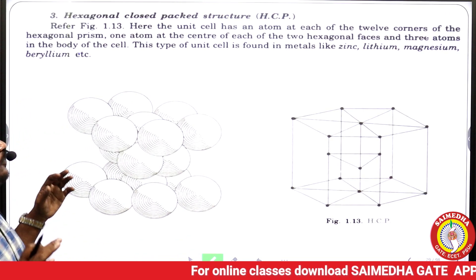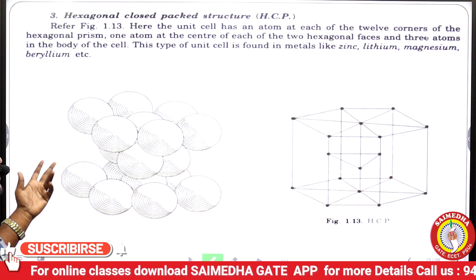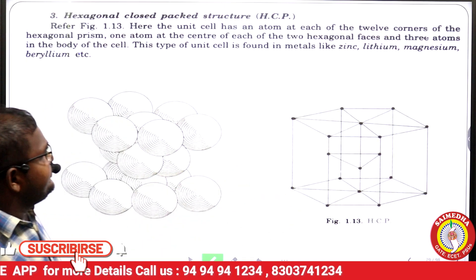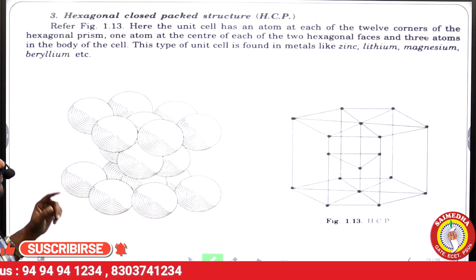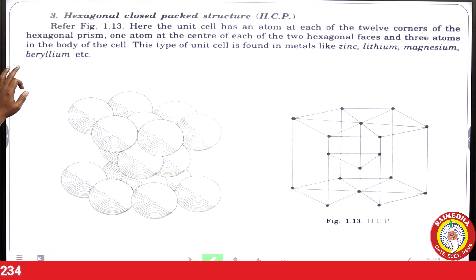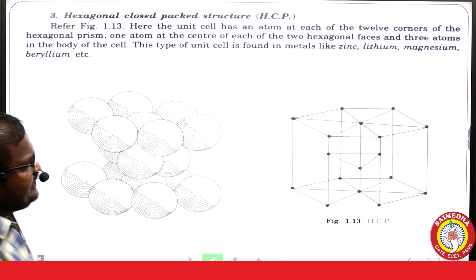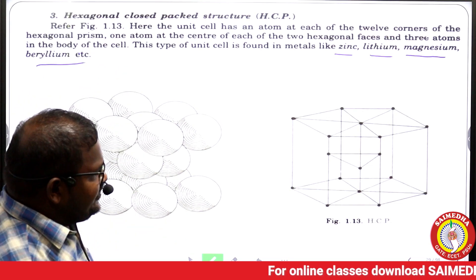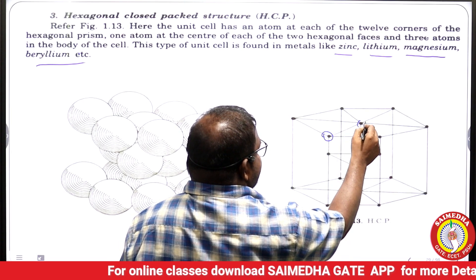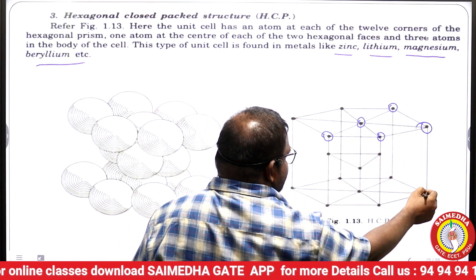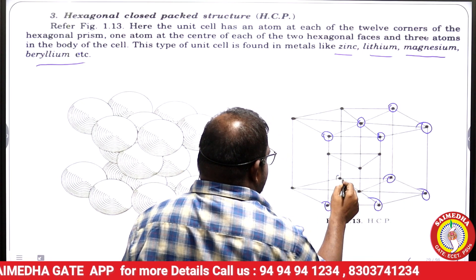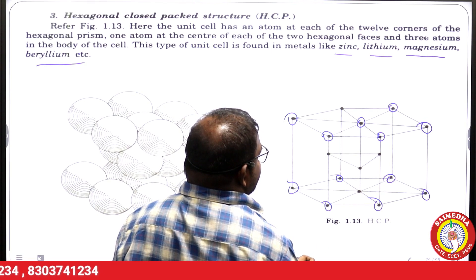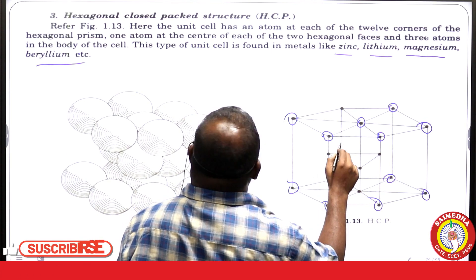Next is the hexagonal close-packed (HCP) structure. The unit cell has an atom at each of the 12 corners of the hexagonal prism, one atom at the center of each of the two hexagonal faces, and three atoms in the body of the cell. This type of unit cell is found in metals like zinc, lithium, magnesium, and beryllium.